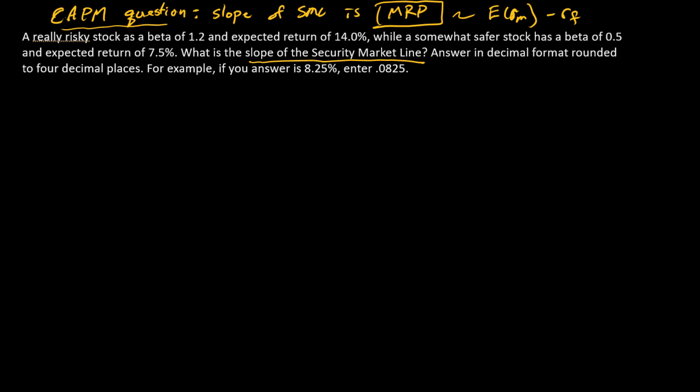So let's go down here and write our CAPM equation. So for stock A, the CAPM says expected return of A is equal to RF plus beta for stock A times expected return on the market minus risk free rate. And this is the market risk premium. So that's the slope.